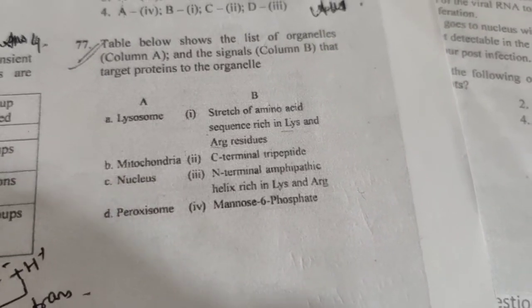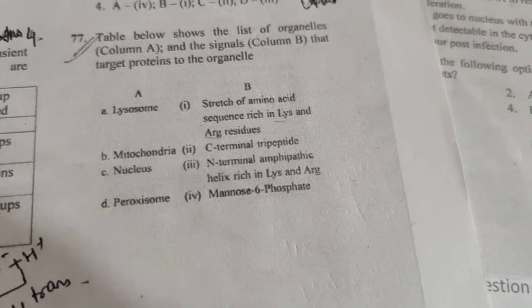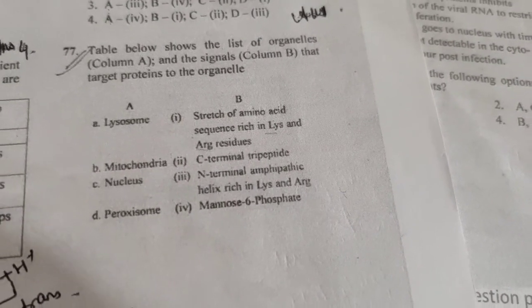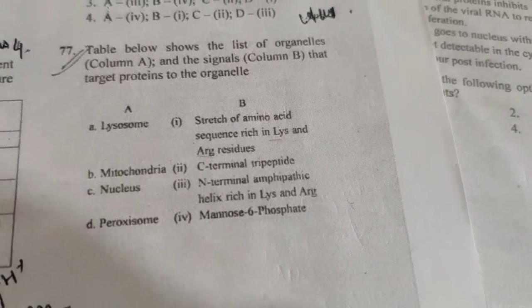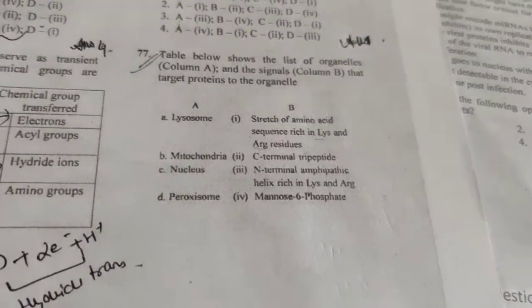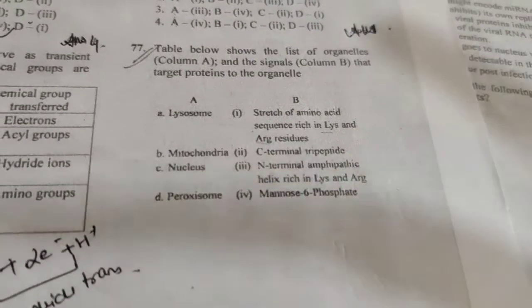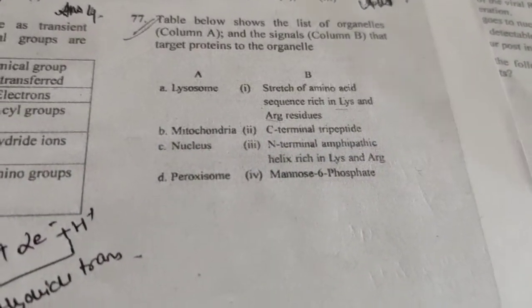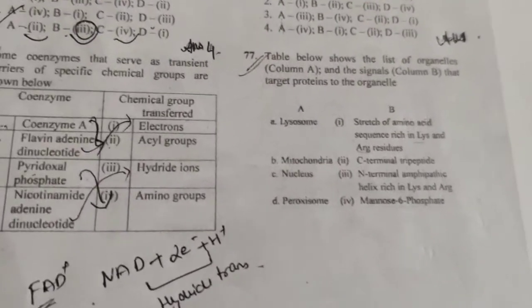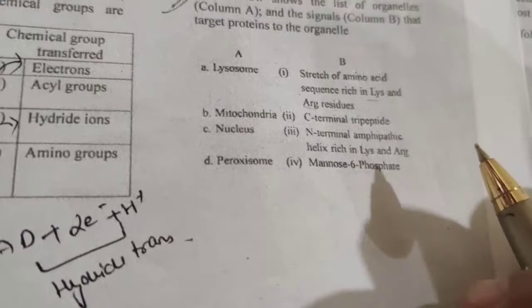So, moving on to question number 77. Table below shows the list of organelles in column A and the signals in column B, the target proteins to the organelles. So basically, you have all the organelles here and in the second column we have target proteins to the organelles. So this is a very direct question.